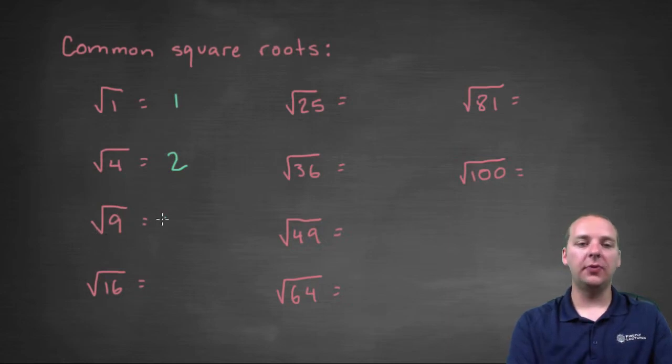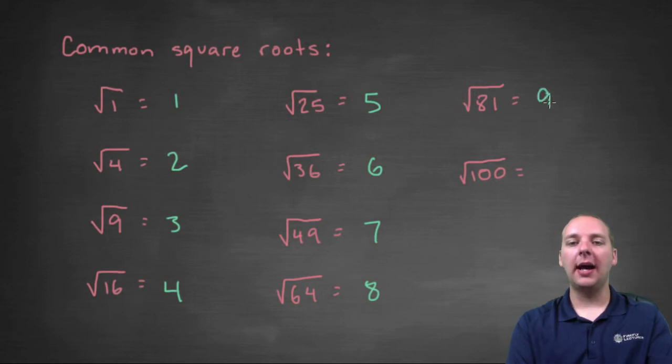The square root of nine, as we've already done, is three. The square root of sixteen would be four, because four squared gives you sixteen. Alright, you help me with the second column here. What would the square root of twenty-five be? That would be five. Because five squared is twenty-five. The square root of thirty-six would be six. The square root of forty-nine, as we've already done, is seven. The square root of sixty-four would be eight. The square root of eighty-one would be nine. Again, because nine squared, or nine times nine, gives you eighty-one. And the square root of a hundred would be ten.